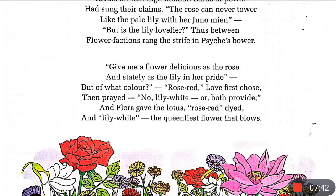'But of what color?' Flora asks what color it should be. Love first chose rose red, then prayed 'no, lily white,' and finally said 'both provide' — give me a combination of both colors. And Flora gave the lotus — dyed with rose red and lily white combined.